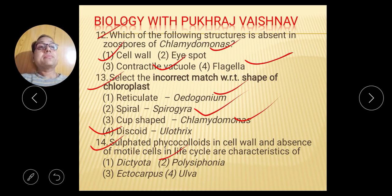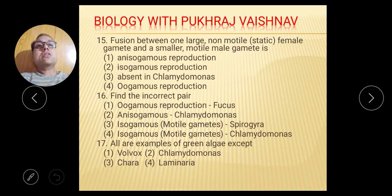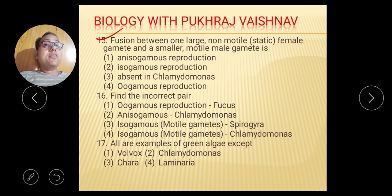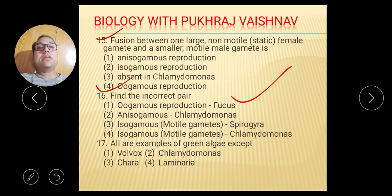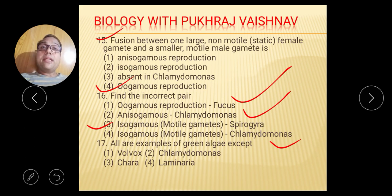Question number 15: Fusion between one large non-motile female gamete and a smaller motile male gamete — one motile and one non-motile — so the right answer is option number 4. Question 16: Find the incorrect statement. Oogamous reproduction in Fucus — correct. Isogamous reproduction in Chlamydomonas — correct. Isogamous in Spirogyra — no, because Spirogyra has isogamous reproduction. So the incorrect one relates to Spirogyra.